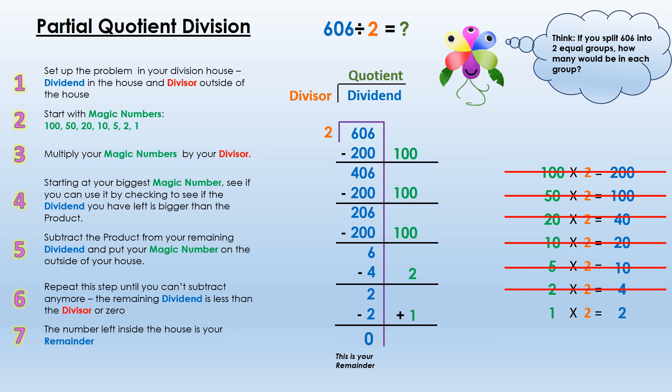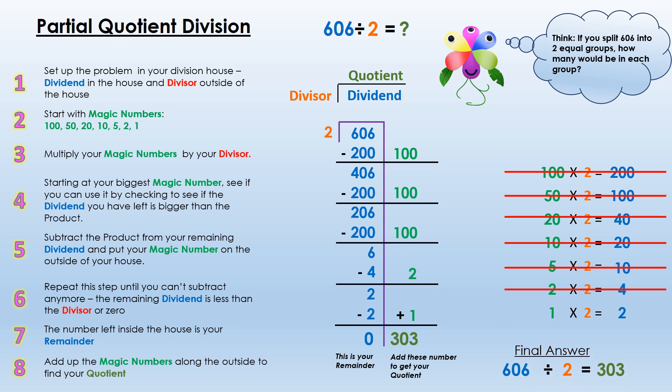Finally, step 7: I have a remainder of zero — I can no longer split my number up any further. Step 8: I add up my magic numbers alongside the house to find my quotient. Those are my partial quotients: 100 + 100 + 100 + 2 + 1 = 303. So my final answer is 606 ÷ 2 = 303.